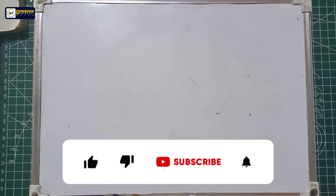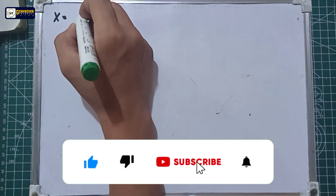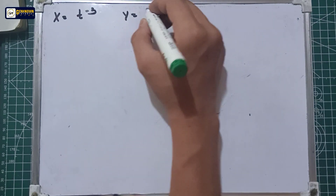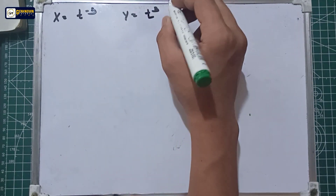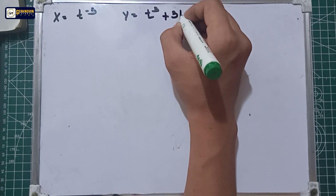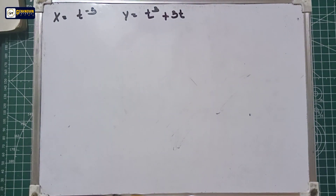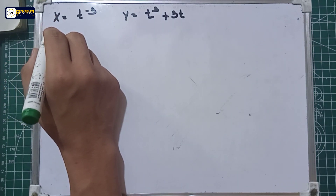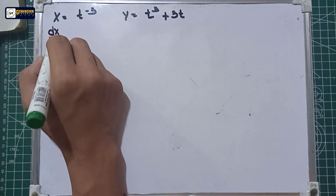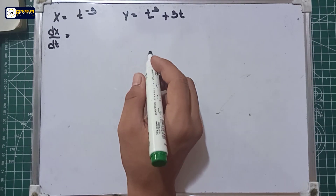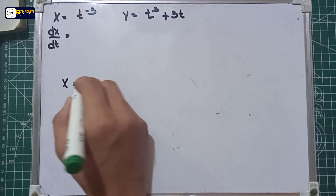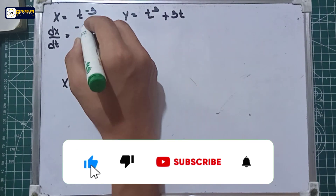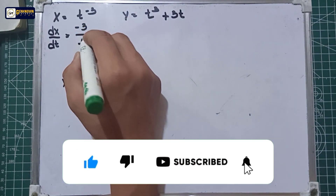For example number two, we have x equal to t raised to negative 3 and y equal to t cubed plus 3t. For the first step we should derive these equations with respect to t. For the x function, dx/dt — remembering that x is also equal to 1 over t cubed — gives us negative 3 over t to the fourth power.